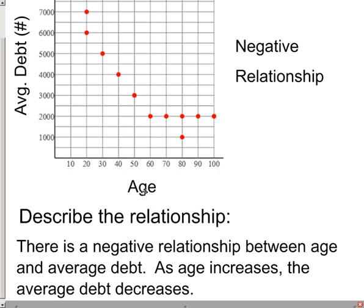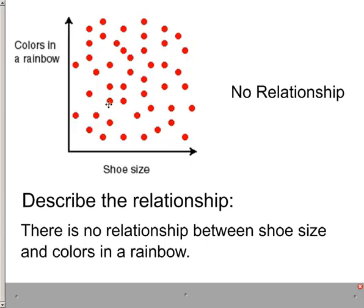You just make sure that you pop in the labels for x and y into your sentences, and it makes it sound a lot better. And the last one, let's take a look at a no relationship. Basically, it's no shock. Shoe size does not change the number of colors in a rainbow. So you would say there's no relationship between shoe size and colors in a rainbow. And there's no need to go into extra detail.